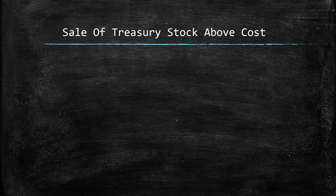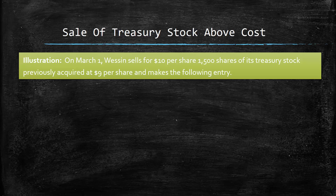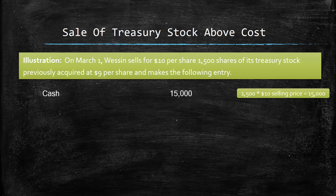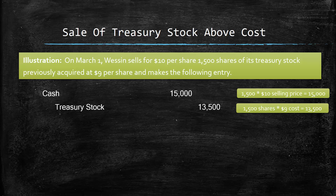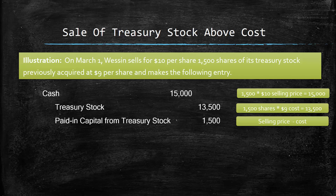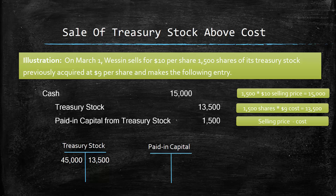So let's look at an example of the sale of treasury stock above cost. On March 1, Wesson sells 1,500 shares of its treasury stock at $10 per share, which it had previously acquired at $9 per share. They're selling 1,500 shares at $10 each, so they're receiving $15,000 cash — we debit cash. We need to reduce treasury stock by the original cost of $9 per share. Since they sold it at a dollar more per share, that difference is an increase to paid-in capital from treasury stock, which is a credit. They previously bought $45,000 worth of stock and now selling reduces the treasury stock account, while the above-cost sale creates paid-in capital from treasury stock of $1,500.